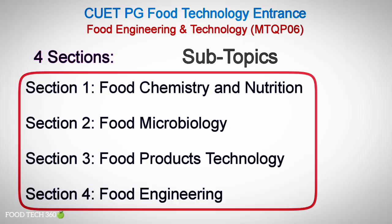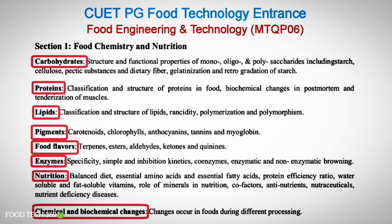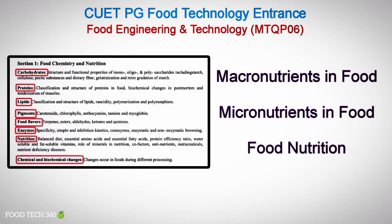Each section contains subtopics as well. In Section 1, Food Chemistry and Nutrition, it contains subtopics such as carbohydrates, proteins, lipids, pigments, food flavors, enzymes, nutrition, and chemical and biochemical changes. Topics to be covered in each subtopic are also given. Questions from Section 1 will be related to macronutrients and micronutrients in food and nutrition in food.